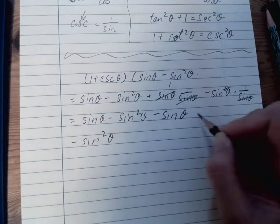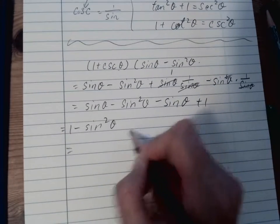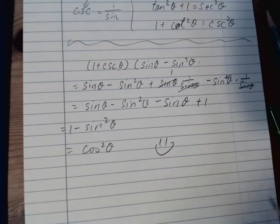So all you have left over will be a minus sin squared theta. And this is a 1 here. And then 1 minus sin squared theta actually equals to cos squared theta. And that is the answer.